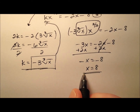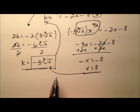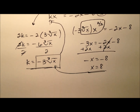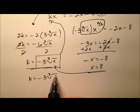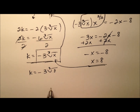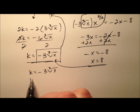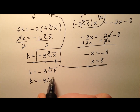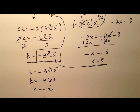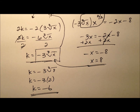Now that we know the value of x, let's plug it in and solve for k. k equals negative 3 times the cubed root of 8. The cubed root of 8 is 2, so k equals negative 6.